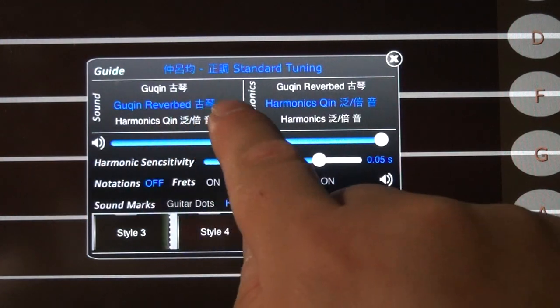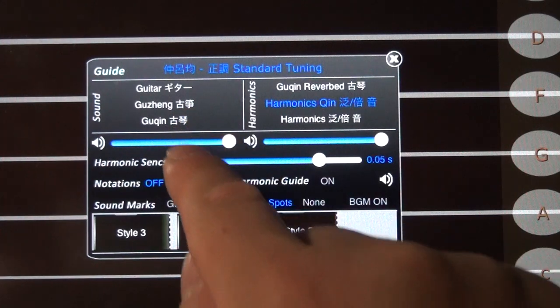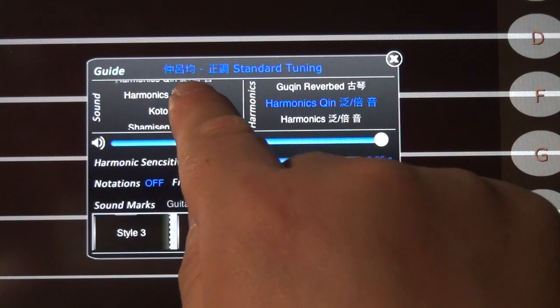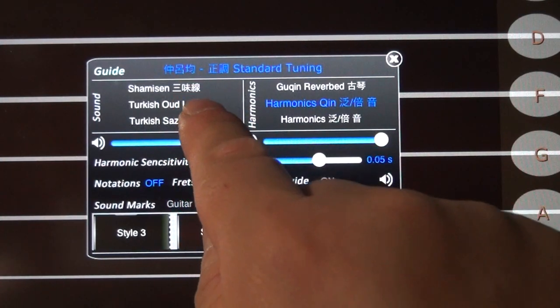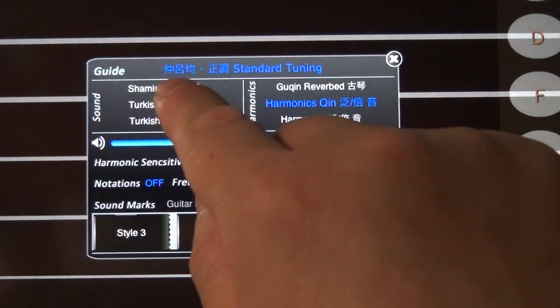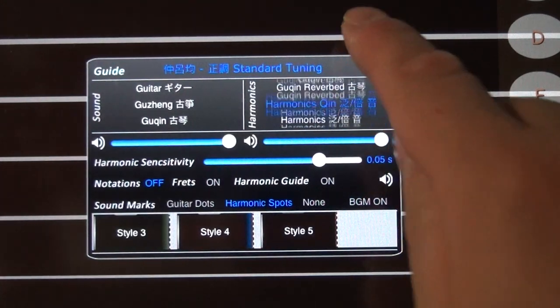The sounds. There are more sounds in this version: Guitar, Guzhang, Guqin, Guqin reverbed, Harmonics of the qing, Harmonics, Koto, Shamisen, Turkish oud lute, and the Turkish saz lute. For the harmonic side, the same thing. We have all these sounds you can use.